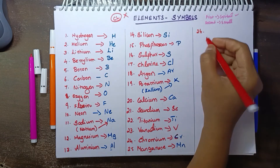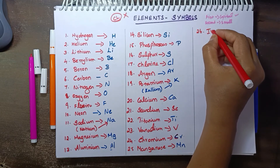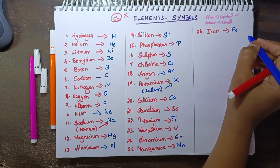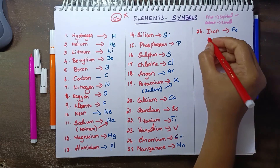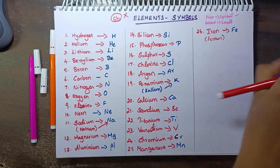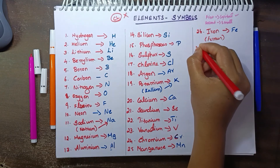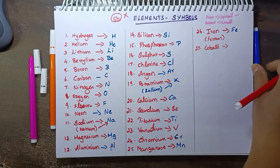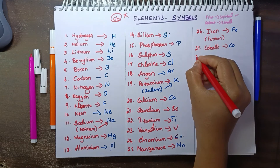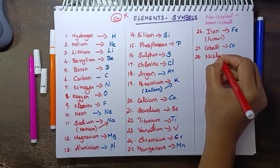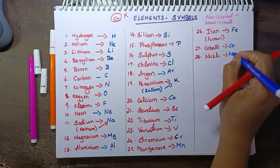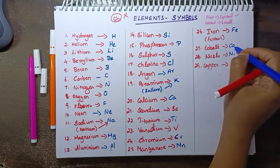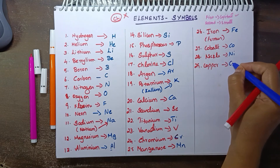Element 26 is iron. Iron's symbol is Fe, from its Latin name ferrum — this is famous and used in many chemical reactions. Next is cobalt, symbol Co. Then nickel, symbol Ni. Then copper — cobalt is already Co, so copper is Cu. Next is zinc, symbol Zn.